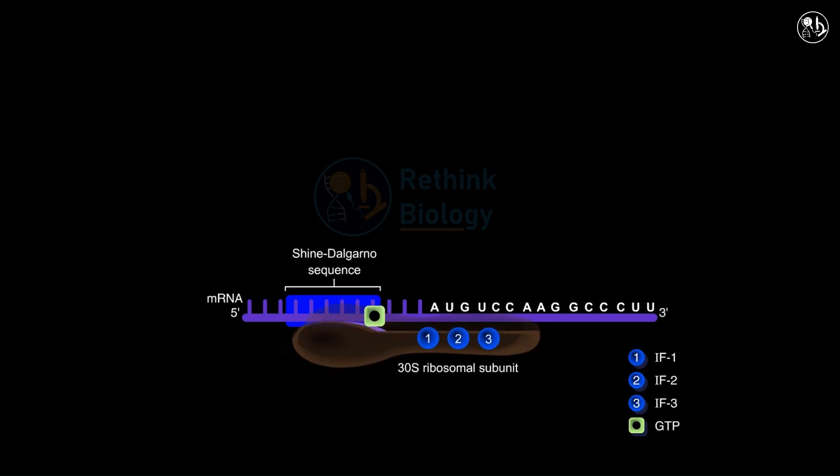This sequence matches a sequence at the 3' end of the 16S ribosomal RNA of the 30S ribosomal subunit and helps to align the ribosome on the mRNA in its correct reading frame.